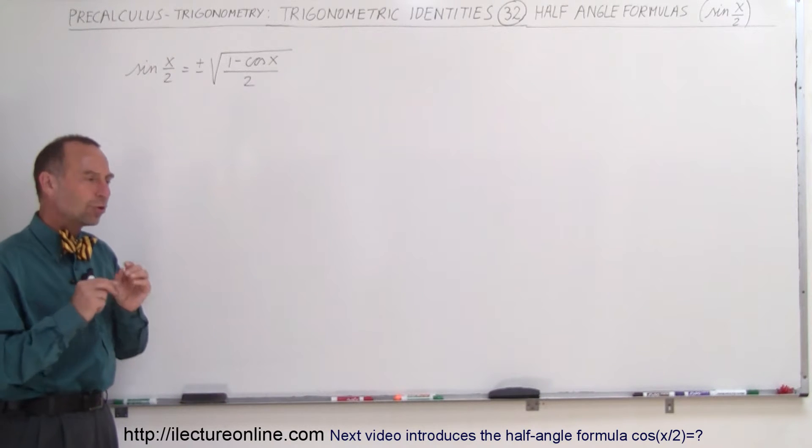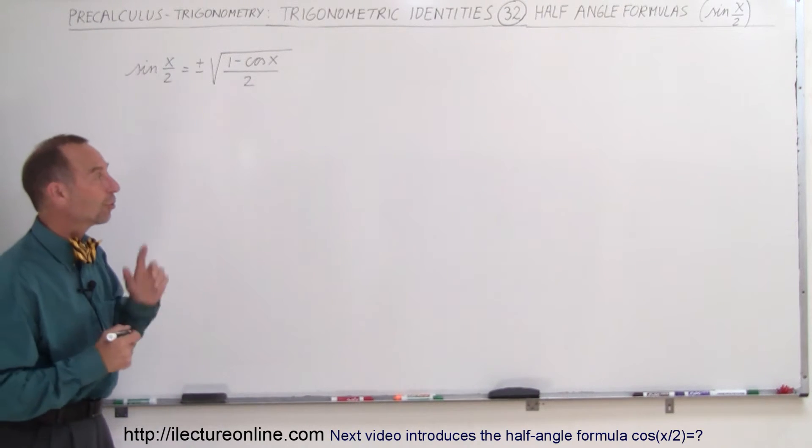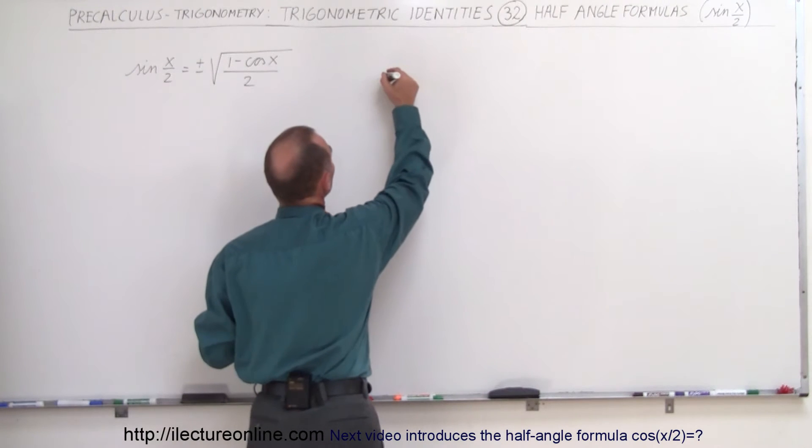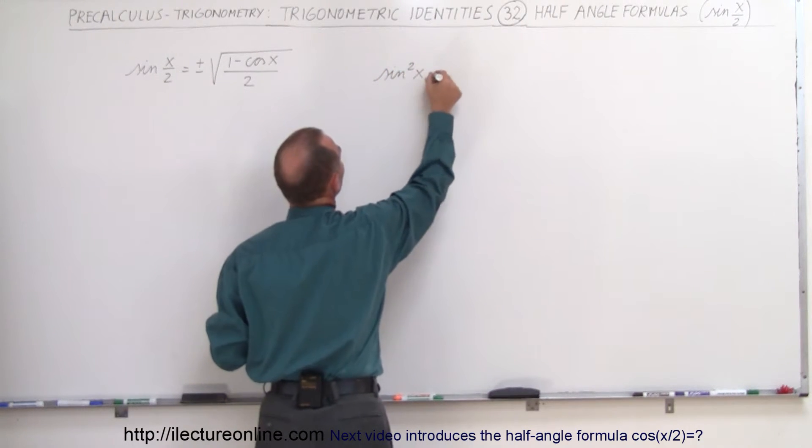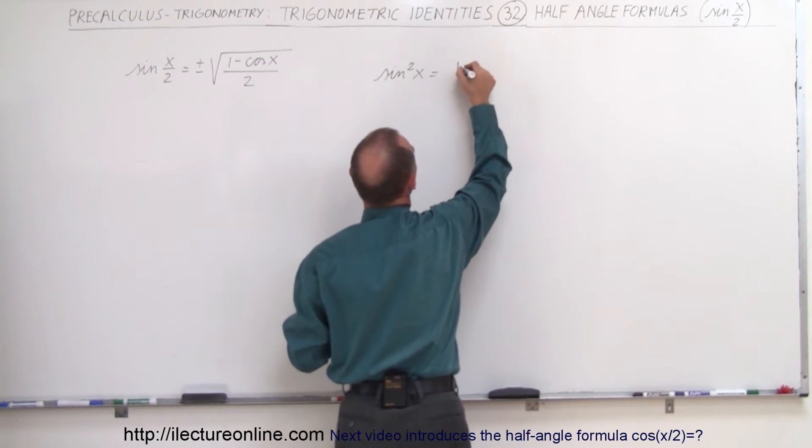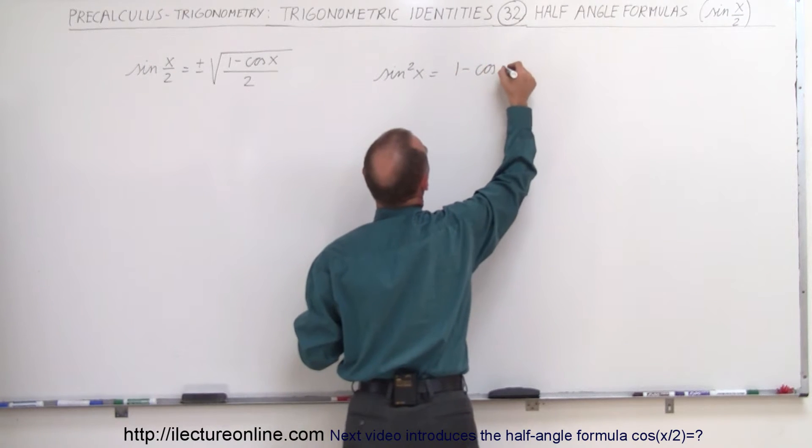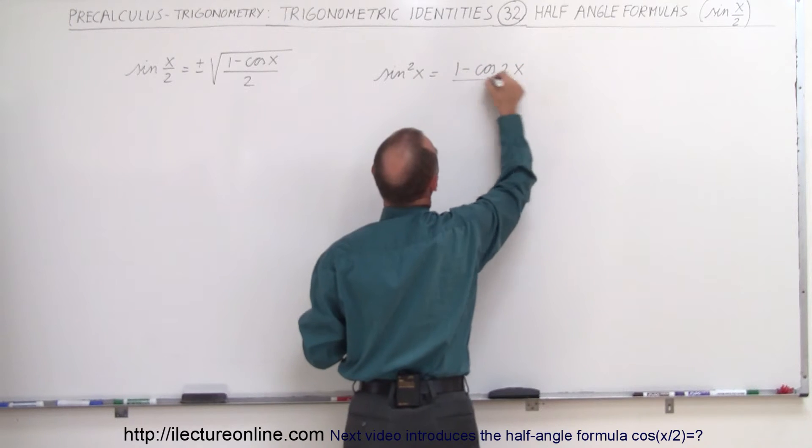Well, we're actually going to use something we just proved in the previous couple of videos. We've shown in the previous video the reduction formula. We showed that the sine squared of x is equal to 1 minus the cosine of 2x divided by 2.